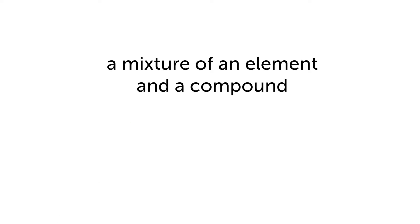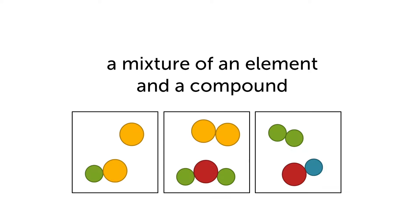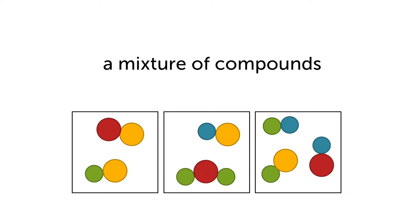We can also have a mixture of an element and a compound. So one part represents an element and another represents a compound, and they are mixed together. We could also have a mixture of different compounds. In each of these boxes there are at least two different kinds of compounds, but the different types of compounds are not joined together — they are just mixed in the same space.